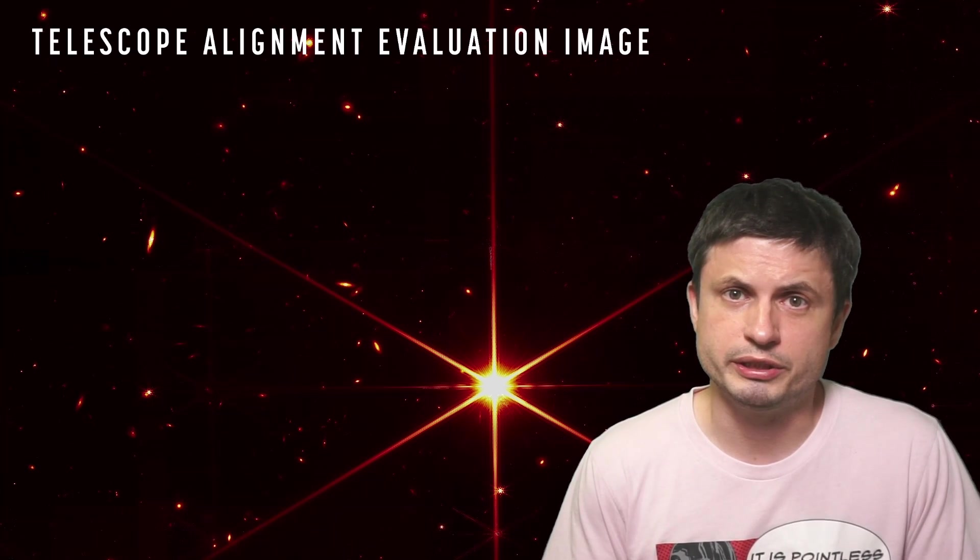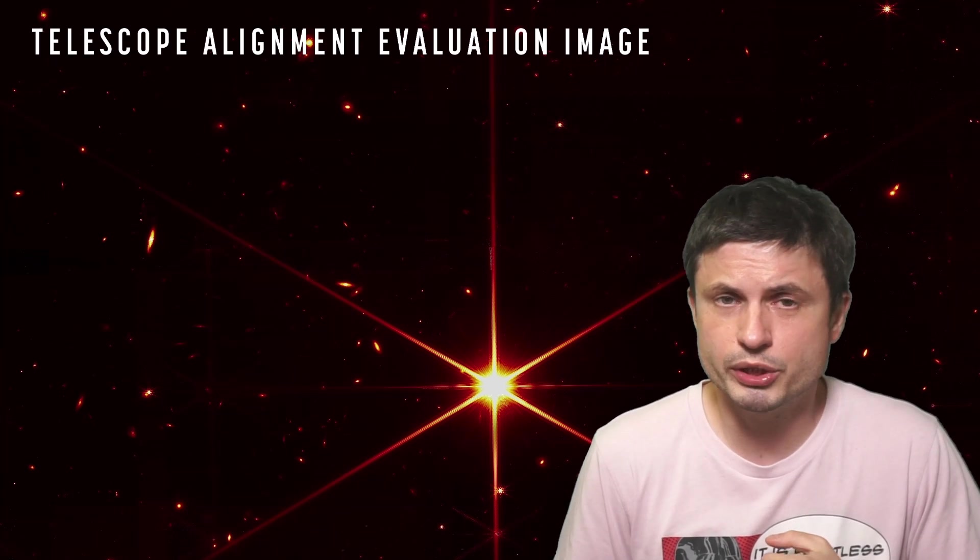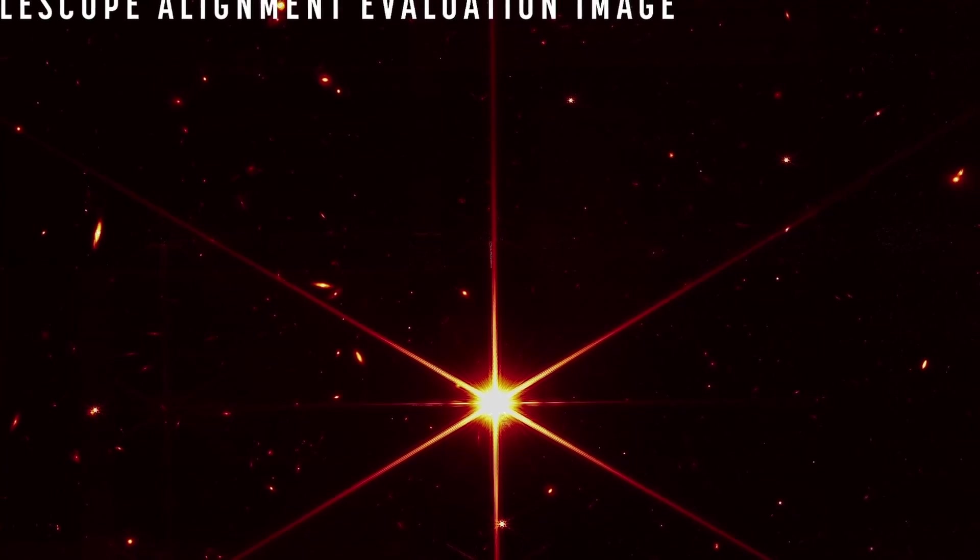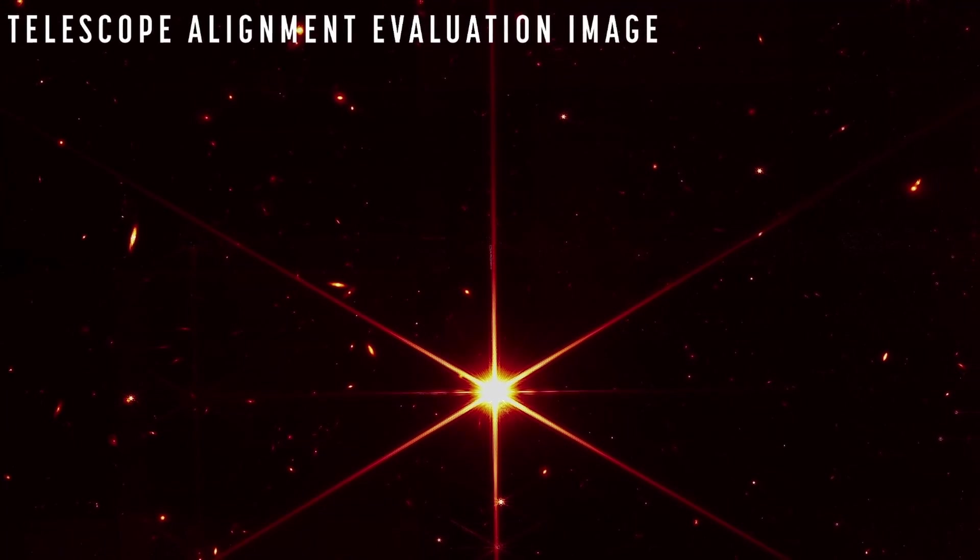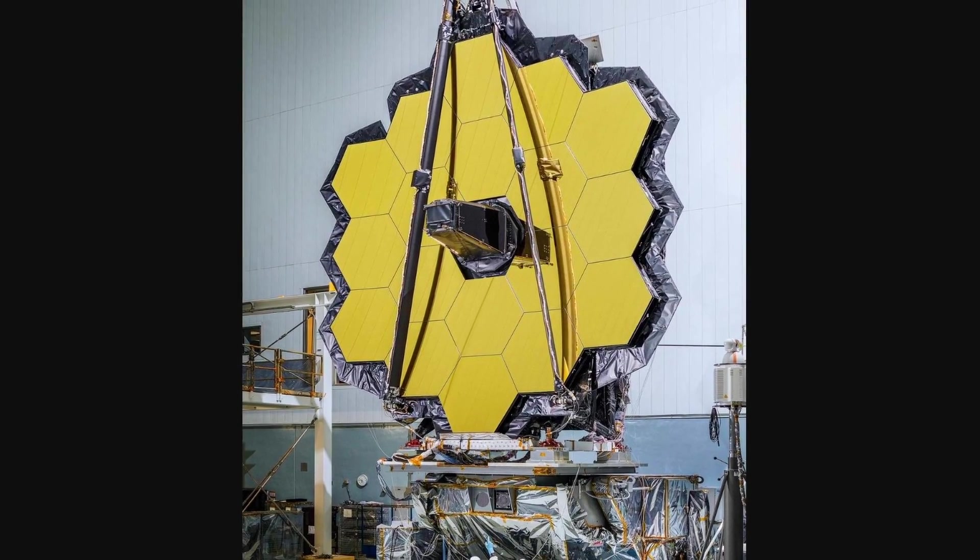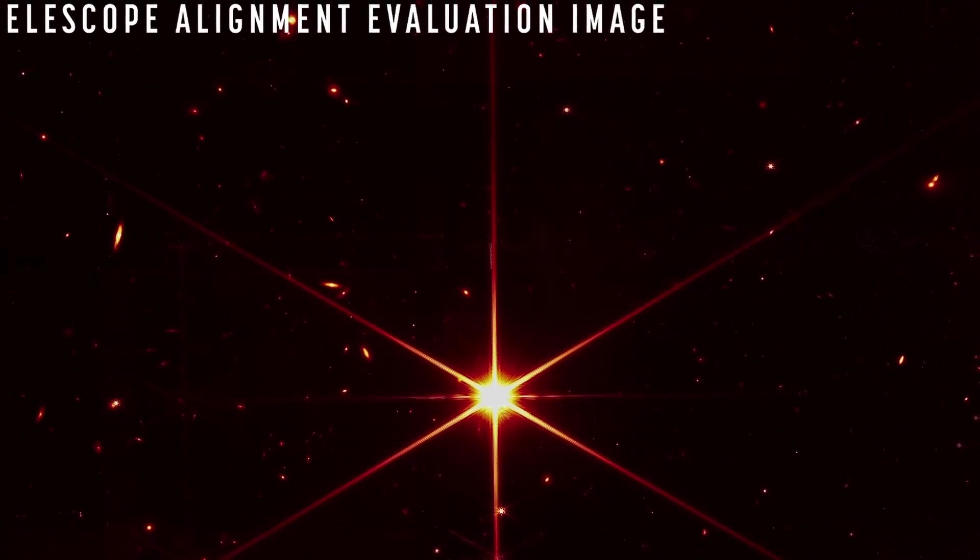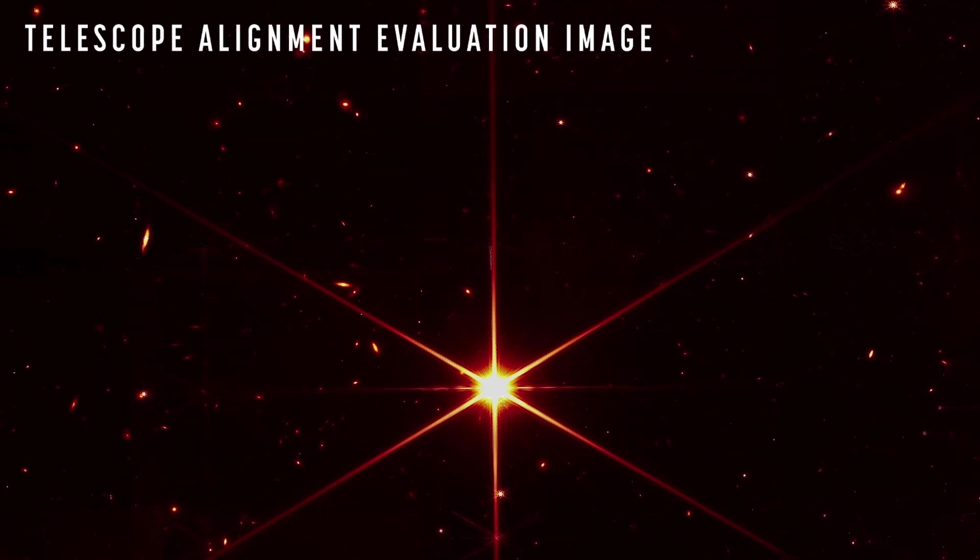Also one common question that a lot of people ask is in regards to the spikes you observe around the star. These are typical spikes visible depending on the shape of the mirror of the telescope and in this case it's the result of the hexagonal shape formed by the mirrors which are also kind of visible around other objects here as well and will be visible in future observations.